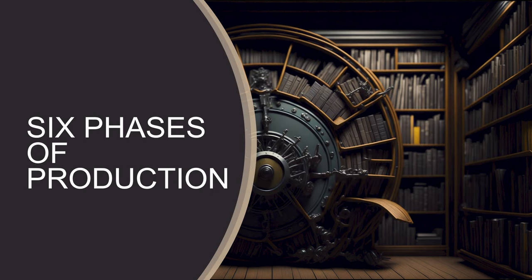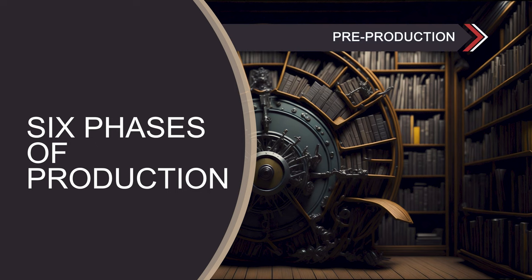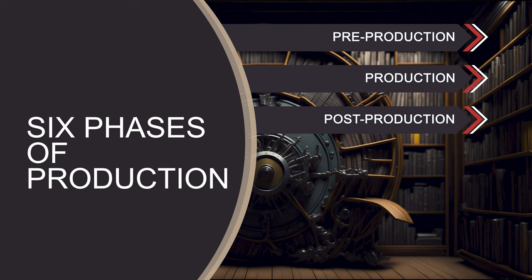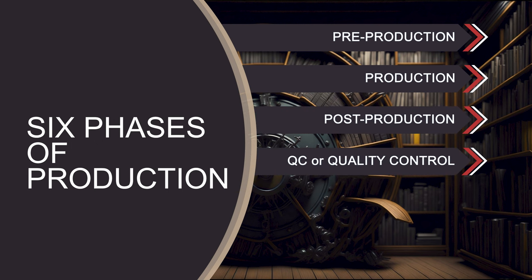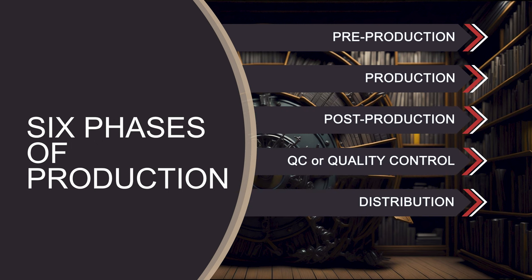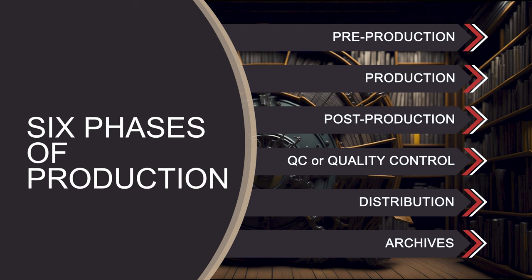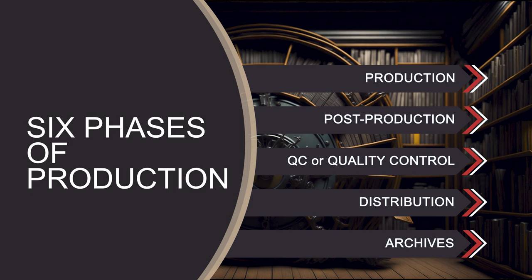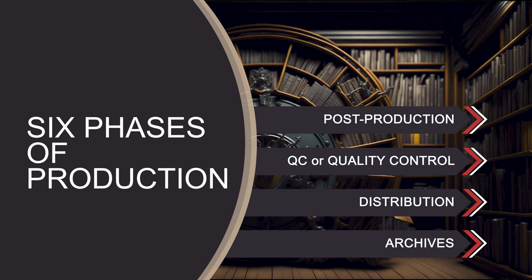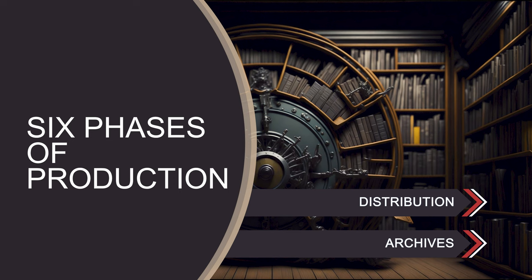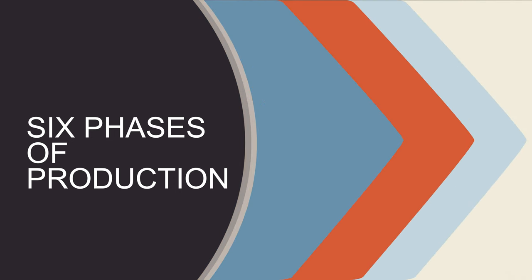Six phases of production. Each phase of production was designed to organize and manage the creative and technical operations from beginning to end. Here are the six phases: pre-production, production, post-production, QC or quality control, distribution, and archives. These production phases are deployed sequentially, but also produce content in scheduled batches and repeat the process in an overlapping manner again and again until the production cycle is complete.